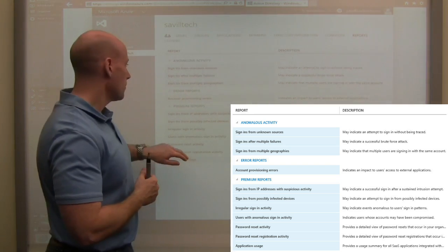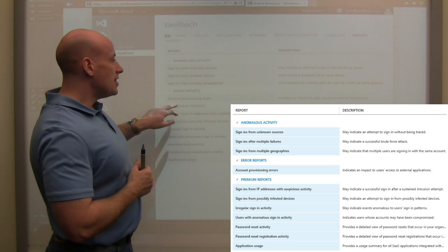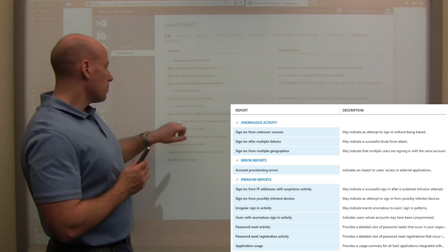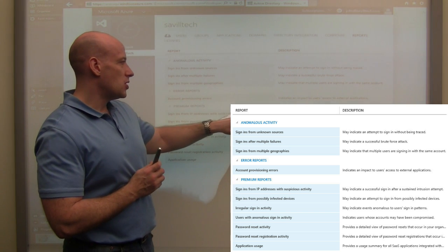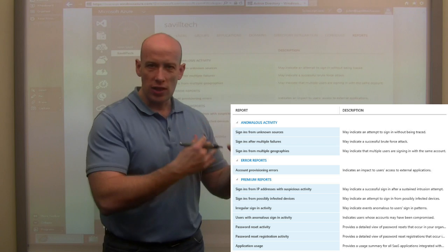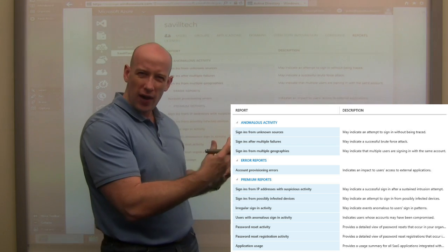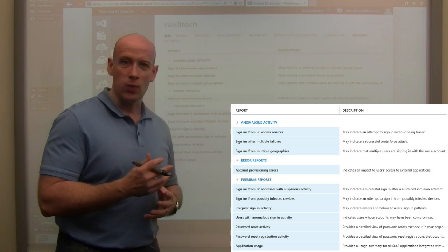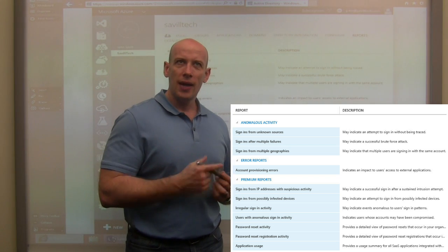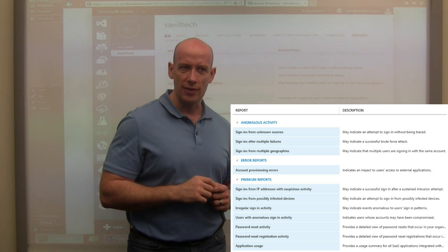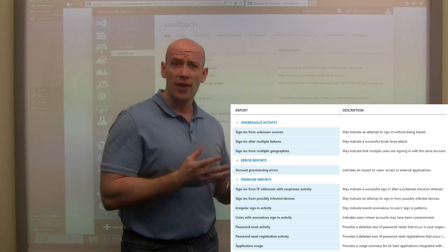Then there's these premium reports. We have the Azure AD premium. Sign-ins from IP addresses with suspicious activity. So maybe there's been a sustained intrusion attempt. They're trying to get in and it's going to flag, hey, look, log-ons. Sign-ins from possibly infected devices. I love this one. How do we know? How can Microsoft possibly know that that device might possibly be infected? There's no statement of health. There's no software running on it. How would it know?